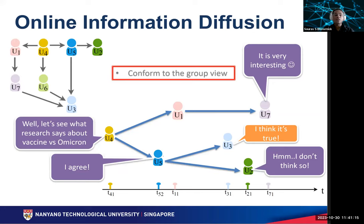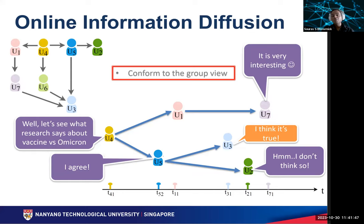If you do not consider social psychology theories such as conformity in modeling information diffusion, then classical diffusion models such as the IC model, which are based purely on the network structure, will predict that U2 is more likely to be activated by U5 than U3. However, if you take conformity of individuals into account, U3 is more likely to be activated instead of U2. Hence, a psychology theory-informed design of the information diffusion model may potentially provide more accurate information on the diffusion process.